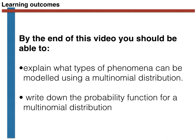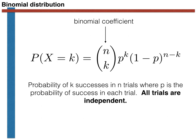Before getting onto the multinomial distribution, let's review a related type of random variable that we have already encountered during this course, namely the binomial random variable. The binomial random variable can be used to model the number of successes in n identical trials that have probability of success p. The probability mass function for this type of random variable gives the probability that there will be exactly k successes when we perform the n identical trials.